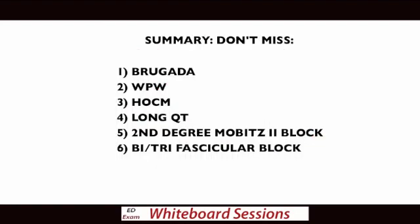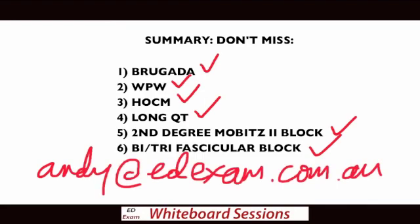So there you have it - that's the 'if you miss it, they die' ECGs. To go through it again, we've looked at Brugada syndrome, Wolf-Parkinson-White, HOCM or hypertrophic obstructive cardiomyopathy, long QT, second-degree Mobitz type 2, and trifascicular block. If you've got any questions or think I've missed something, feel free to write in - my email address is andy@edexam.com.au. There are other ECGs that you shouldn't miss in the exam, but they're usually less life-threatening. I'll do those in another session, but for now go back, write this list out, stick it on a mirror in your bathroom, and get to know these ECGs inside out so you won't miss them on exam day. Good luck.